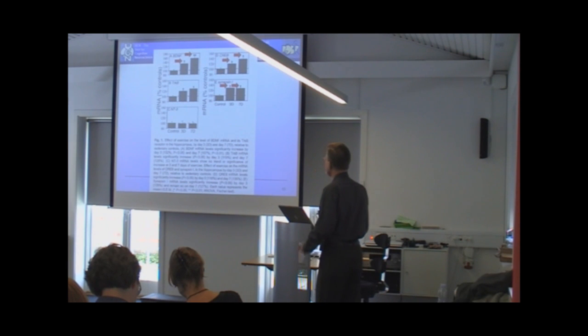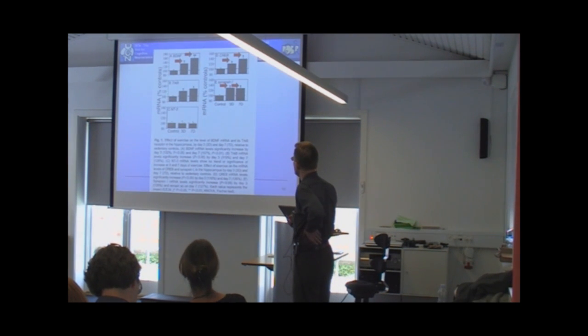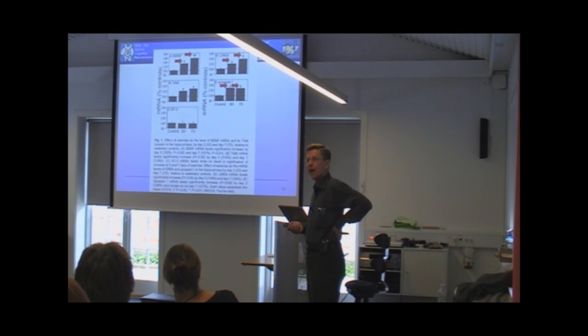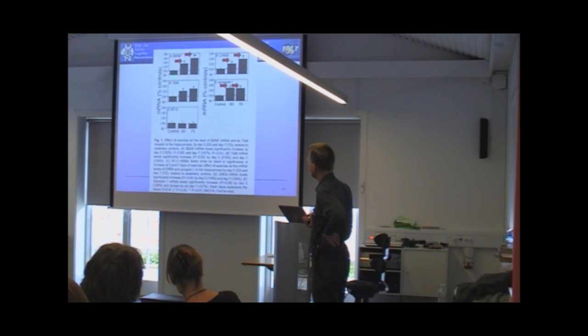So as you can see here, we have some controls. This is the level of the messenger RNA for BDNF. This is for another substance which we're only going to mention briefly, called CREB and one called synapsin. These two substances primarily support plasticity, the changes of the synaptic structure. BDNF promotes both the survival of neurons and the plasticity. But anyway, we're going mainly to talk about BDNF.